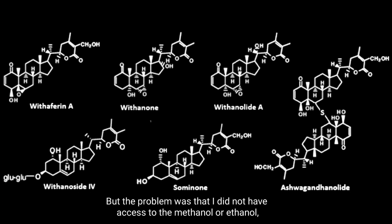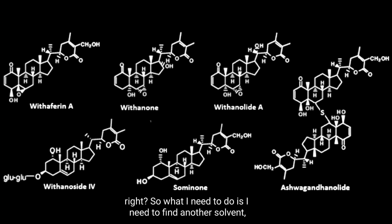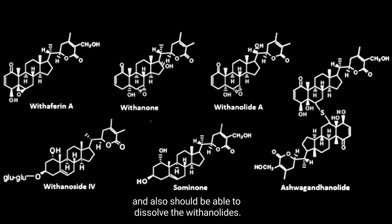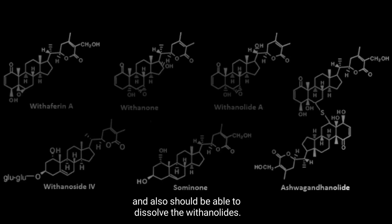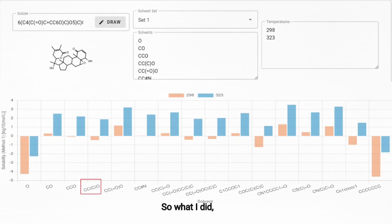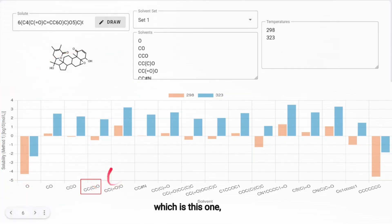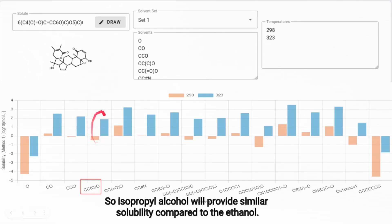They are soluble in ethanol and methanol, but the problem was I did not have access to methanol or ethanol. So I needed to find another solvent I could access that would also dissolve the withanolides. I fired up solubility prediction software and found that isopropyl alcohol — SMILES: CCCO — would provide similar solubility compared to ethanol at around 50°C (323 K).